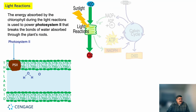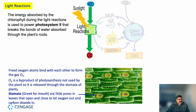In the light reaction, the energy absorbed by chlorophyll is used to power Photosystem II, which breaks the bonds of water absorbed through the plant's roots. This splits the water molecule, leaving free oxygen atoms that bind together to form O2 gas. Oxygen is a byproduct of photosynthesis not used by the plants, so it is released through the stomata. Stomata is Greek for 'mouth' — these are little pores in the leaves that open and close to let oxygen out and carbon dioxide in.